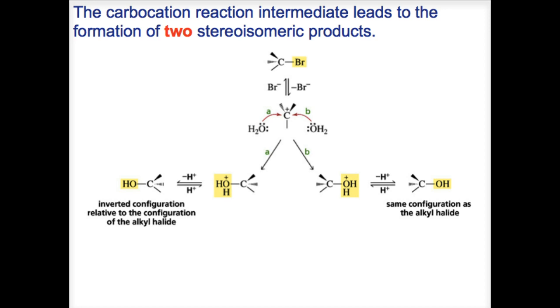One with the same configuration at the asymmetric carbon as the reacting alkyl halide, and the other with the inverted configuration. The positively charged carbon of the carbocation intermediate is sp2 hybridized. The three bonds connected to it are in the same plane. In the second step of the SN1 reaction, the nucleophile can approach the carbocation from either side of the plane.